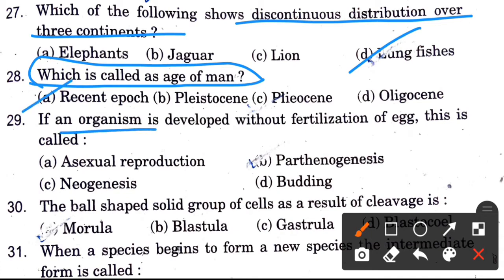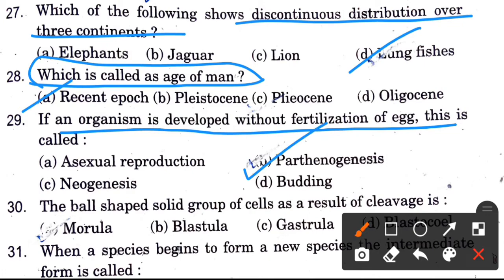If an organism is developed without fertilization of egg, this is called — options are asexual, parthenogenesis, neogenesis, and budding. If an organism forms without fertilization, this process is called parthenogenesis.